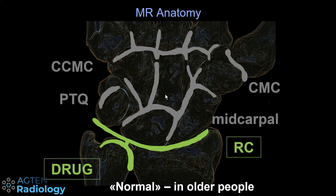A communication between the distal radio-ulnar joint and the radiocarpal compartment can be considered a normal finding in elderly people — I would say above 40 you can find this as a normal degenerative process through small perforations in the TFC. If it's in a young adult then clearly it's probably a traumatic injury, but not in elderly people. Frequently they are also on both sides, which is another hint that it's just a normal degenerative process.